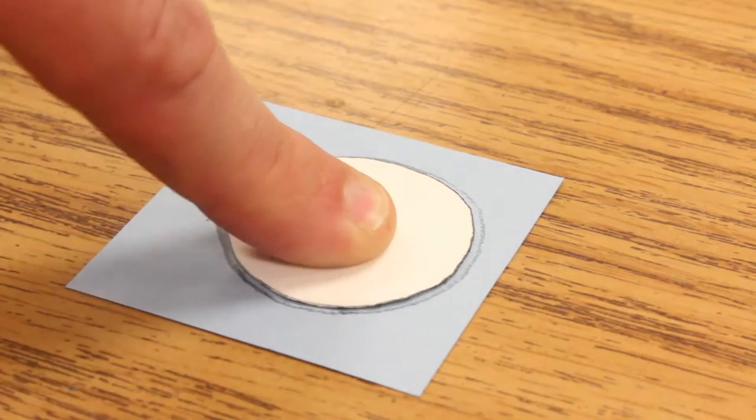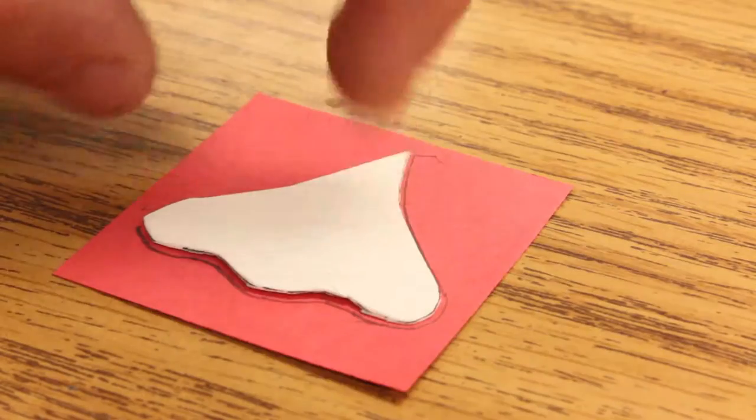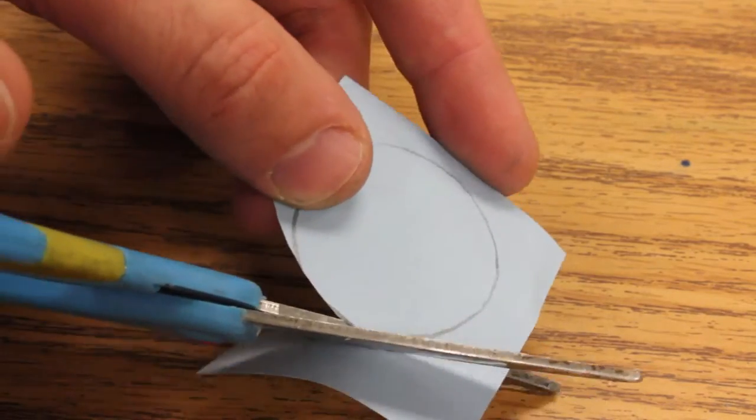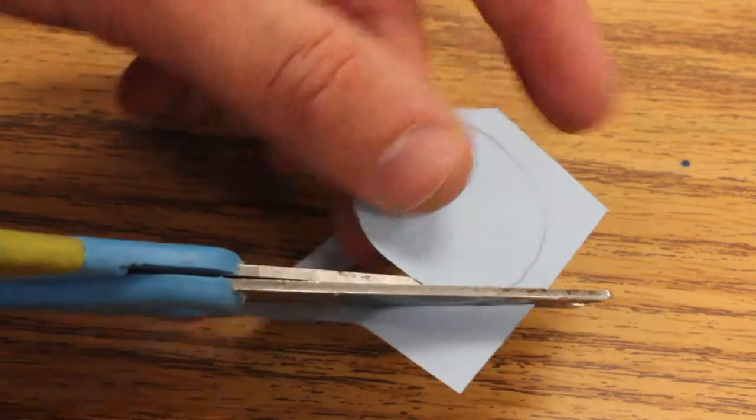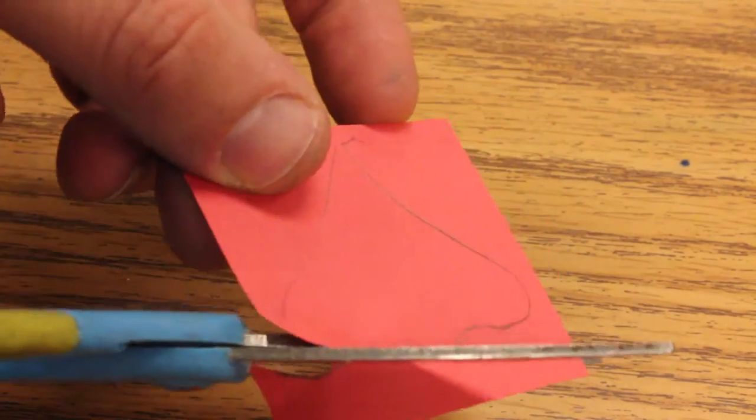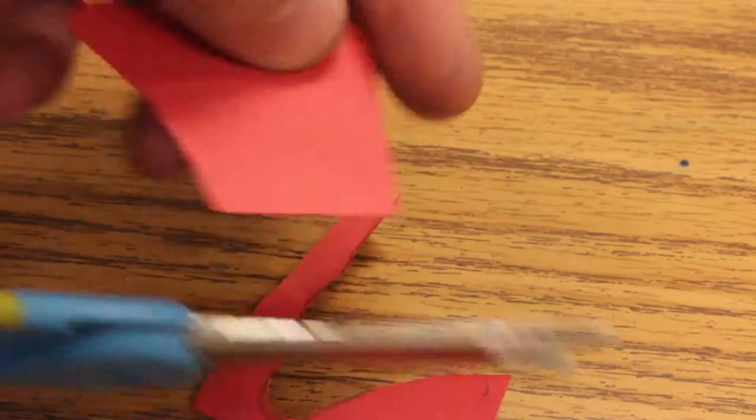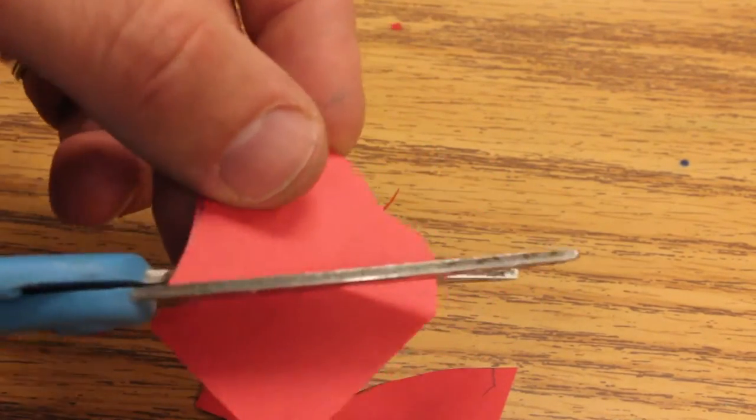Next you're going to trace around your template for your eyes and for the nose, then carefully cut those out. Notice I'm turning the paper as I go so that I can get those round lines. I'm moving the paper as I cut instead of moving my scissors.